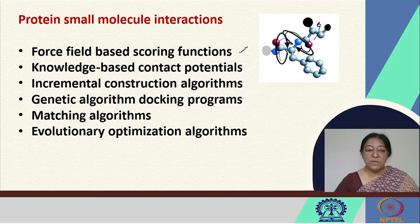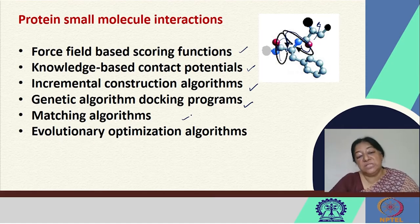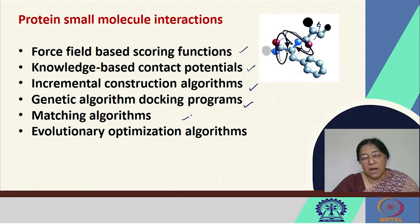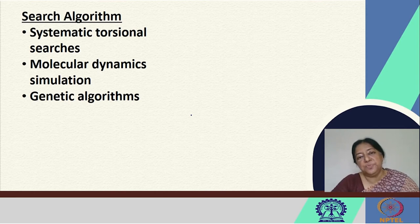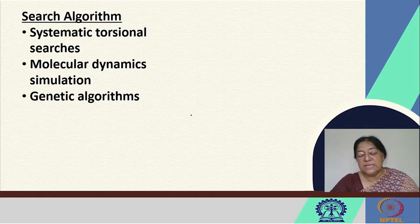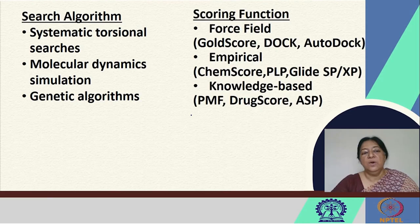Scoring functions can be force-field based, knowledge-based contact potential, incremental construction algorithms, genetic algorithm docking programs, matching methods, or evolutionary optimization algorithms. In the search algorithm, we can look at systematic torsional searches or MD simulations that give a better idea of how the ligand is binding to the protein. However, since MD simulation is computationally intensive, a typical simple docking study is used first, with MD simulation reserved for further detailed understanding.